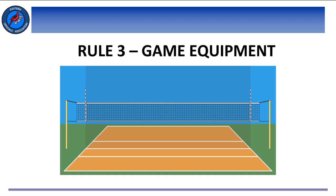Rule 3 is titled Game Equipment. Typically, we only look at Section 2, which is titled The Ball. However, Rule 3 also encompasses the net and the markings on the net, padding on the post for standards, and the referee stand.